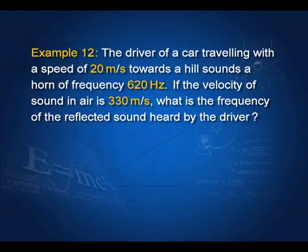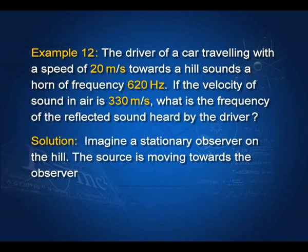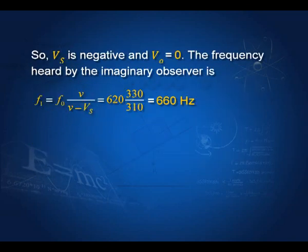A car traveling at 20 m/s towards a hill sounds a horn of 620 Hz with sound velocity 330 m/s. Imagine a stationary observer on the hill — the source moves towards the observer, so Vs is negative and V₀ is zero. The frequency heard by the imaginary observer is F₁ equal to F₀ times V by (V minus Vs), which gives 660 Hz.